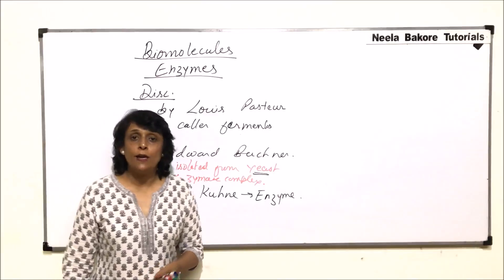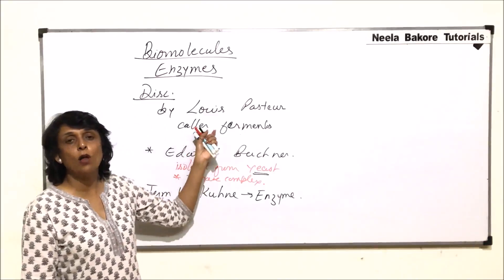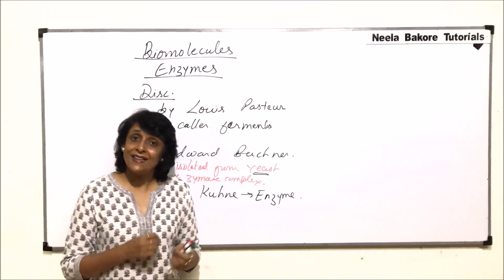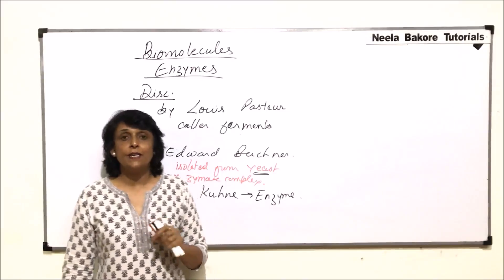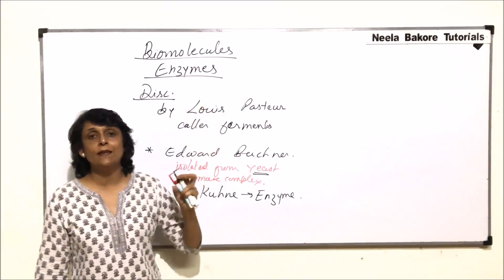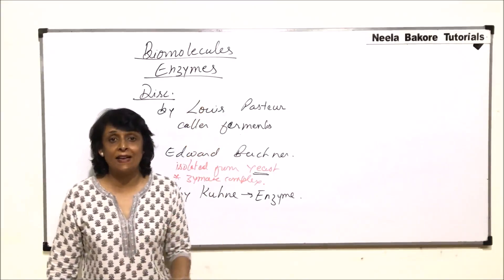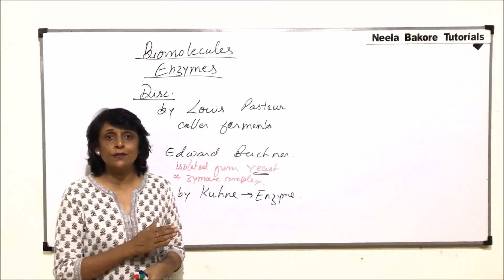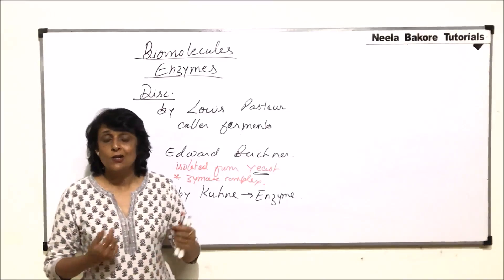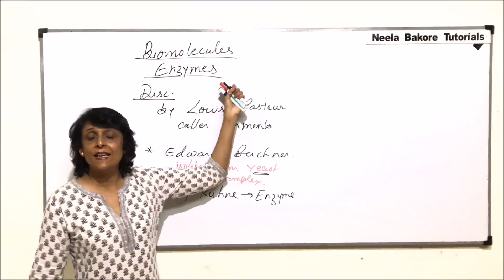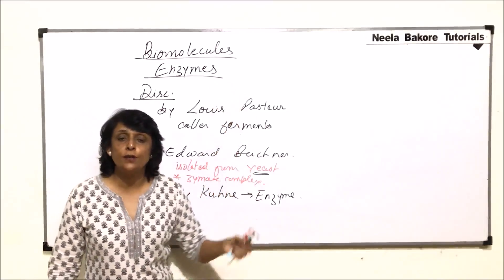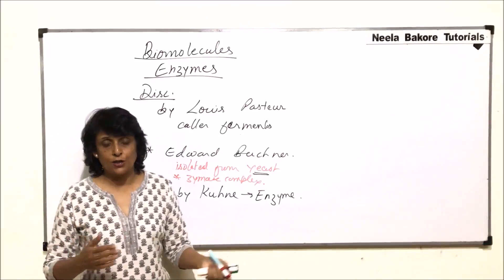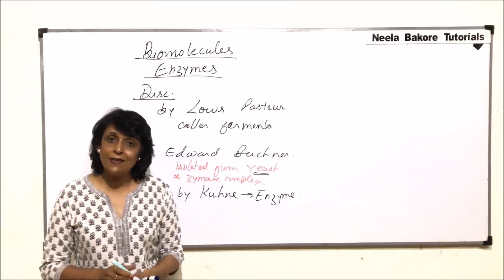Enzymes are compared with catalysts, or in other terms we can call them biocatalysts. They increase or decrease the rate of reaction. Earlier, the definition of enzyme was that these are chemicals which enhance the rate of reaction. But it has been observed that they can lower the rate as well as increase it. So the modified definition is that enzymes are substances which alter the rate of reaction — it can go in both directions.